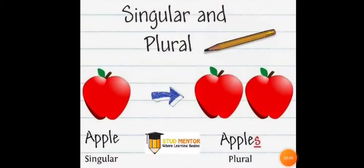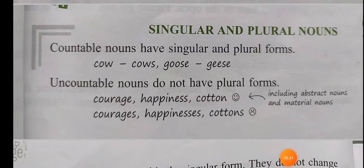Whether a noun is countable or uncountable depends on the context in which it is used. Now, singular and plural — observe this picture. Here, one apple on one side, two apples on the other. Singular is one thing, and plural is more than one thing. So countable nouns have singular and plural forms. For example, cow, cows; goose, geese, etc.